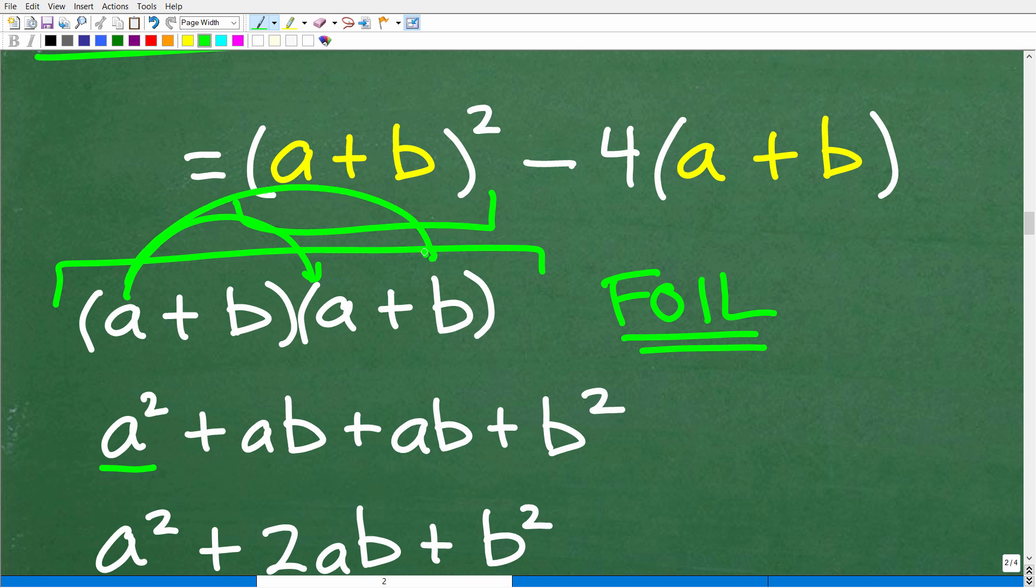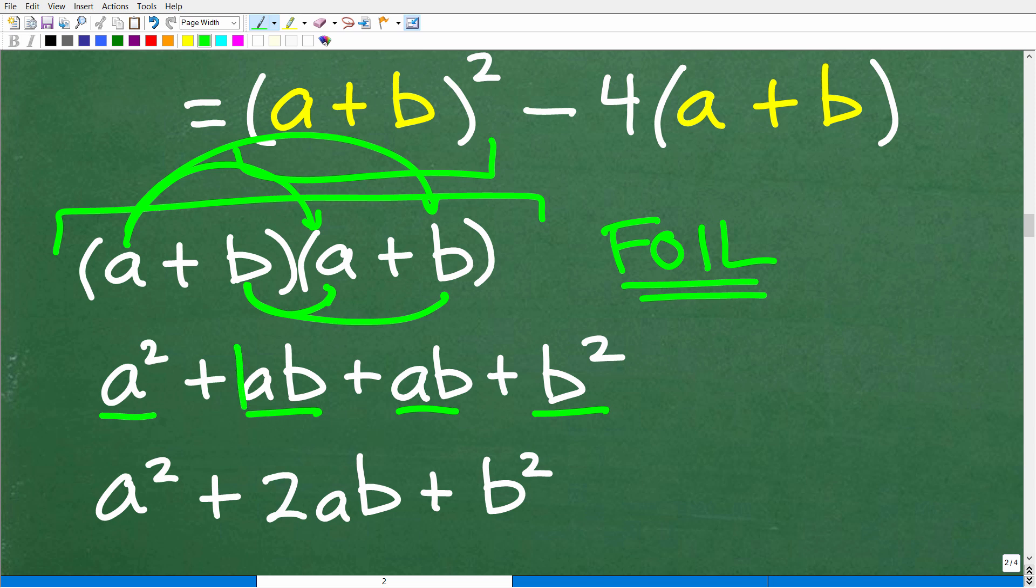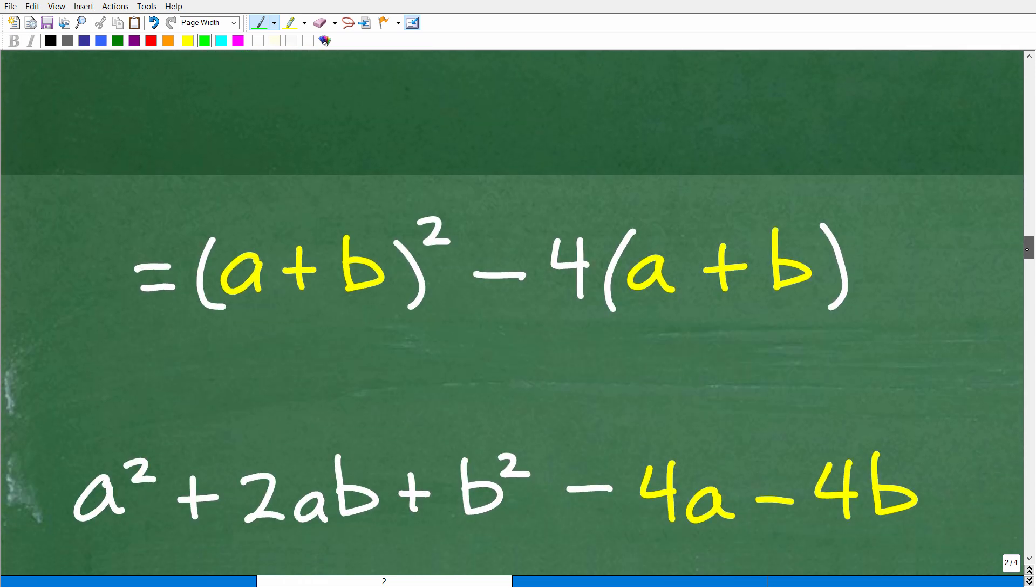So that's a². a × b is ab. b × a is ba or ab. And then b × b is b². All right, so we have some like terms here. So ab + ab is 2ab. So now we have a² + 2ab + b². Okay, so that is what (a + b)² is equal to.